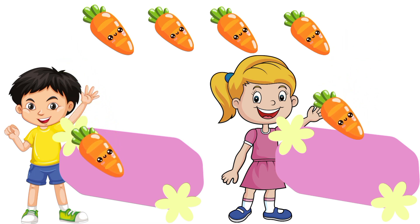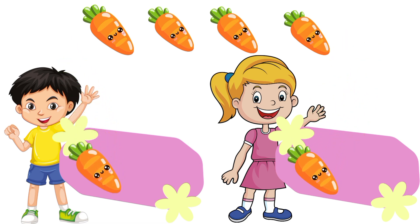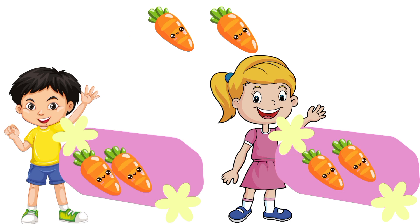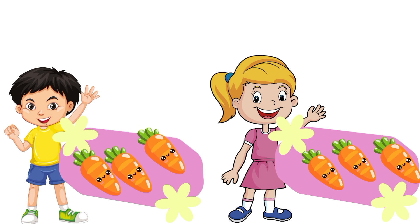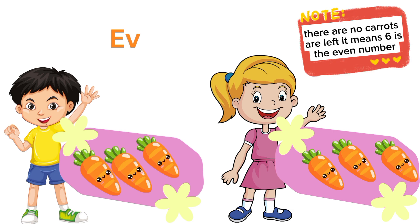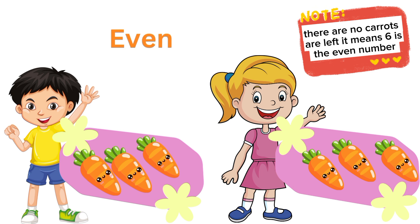One to Sandy, one to Cody, one to Sandy, one to Cody, one to Sandy, and the last one to Cody. There are no carrots left over, and both of them have the same number of carrots. That means that the number six is even.